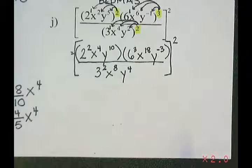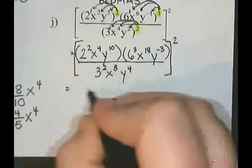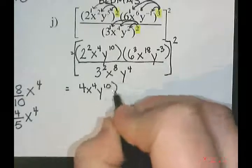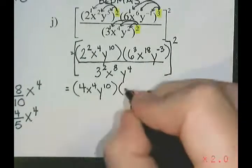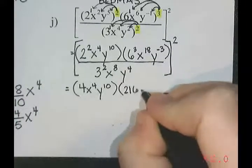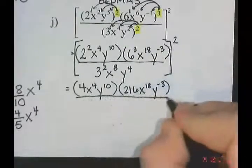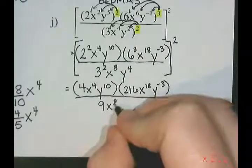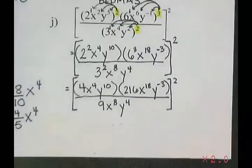From here, I am going to evaluate 2 squared, 6 cubed, and 3 squared. 2 squared is 4, x to the 4, y to the 10. 6 to the power of 3 — we saw that one earlier — is 216. So that's 216, x to the 18, y to the negative 3. And in the denominator, 3 squared is 9, x to the 8, y to the 4. Don't forget, that's all still in those big brackets squared.